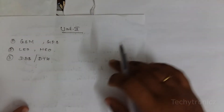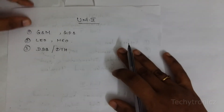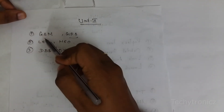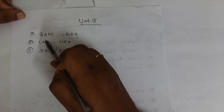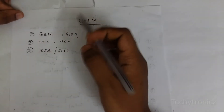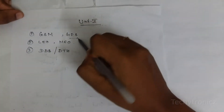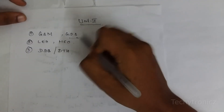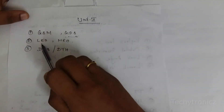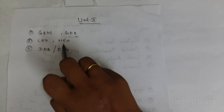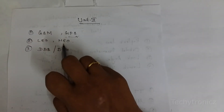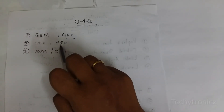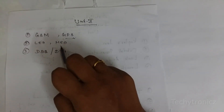In unit 5, GSM and GPS are important. GSM is global system for mobile communication and GPS is global positioning system. These two are important questions. Also, low earth orbit and medium earth orbit are important, though these are smaller questions that sometimes appear in the question paper.